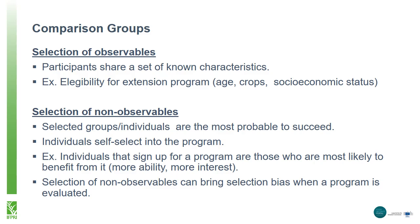When we think about observable characteristics of participants we need to control for, it could include factors that make them eligible for the program — in the case of the extension program, perhaps their age, the type of crop they are growing, their production or income level. We would want to look for a control group with the same characteristics. On the other hand, there are unobservable characteristics that are more difficult to control for, such as individuals who self-select into the extension program — for example, farmers that have more interest in marketing. The individuals that register for a program are also more likely than others to succeed. This can bring selection bias, and we need to control for this bias to avoid underestimating or overestimating the impact of a program.